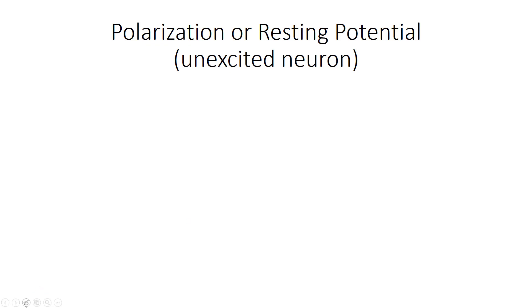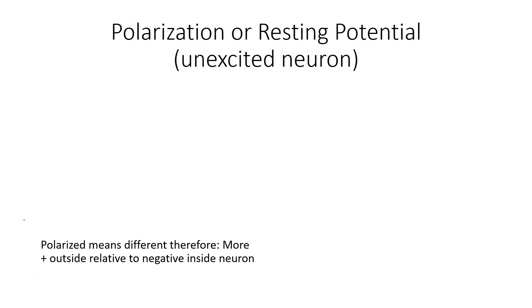If we take a look at polarization, polarization is also known as resting potential. This is an unexcited neuron — something that hasn't been stimulated by some type of stimulus like heat, temperature, pressure, or any of that kind of stuff. It hasn't been stimulated yet.